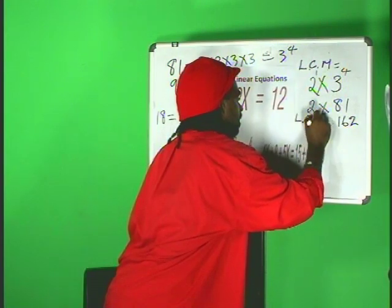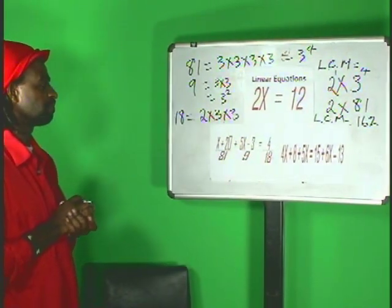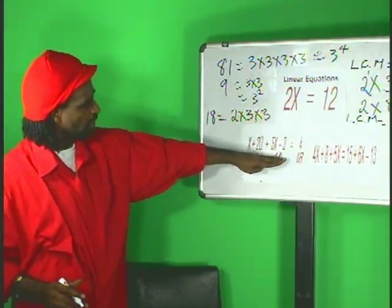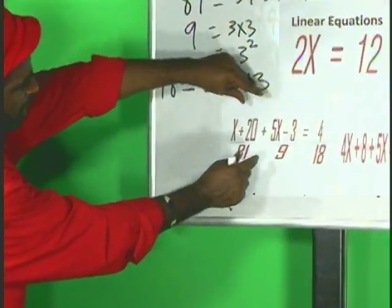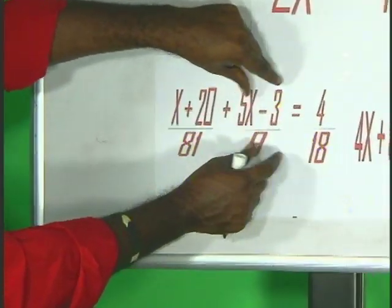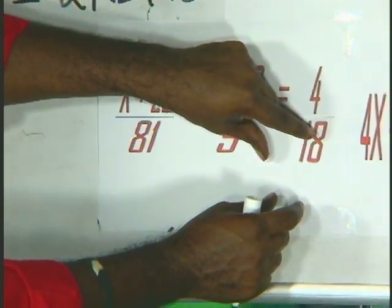The LCM, in essence, is equal to 162. So, to flatten this equation, you multiply this piece here by 162, this piece by 162, this piece by 162.